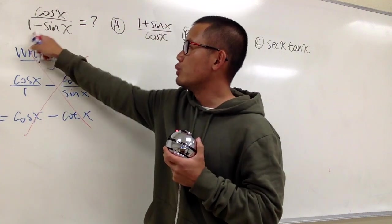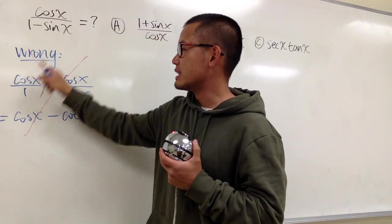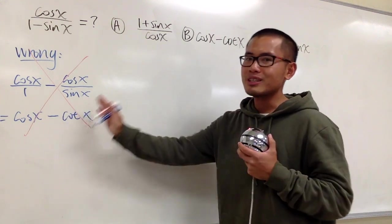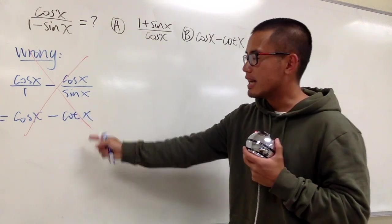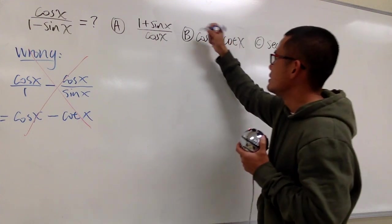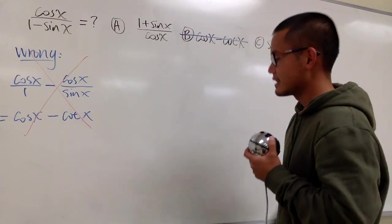The reason is because when we have two terms on the bottom, we cannot split the fraction like this. Do not do it like this. With this being said, you see that choice B is the wrong answer. Let's get rid of that.